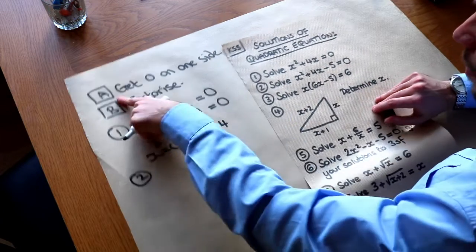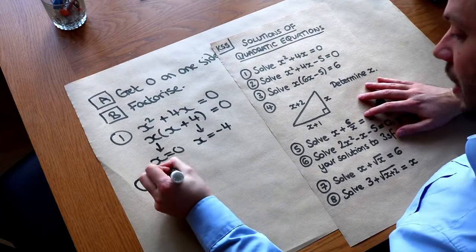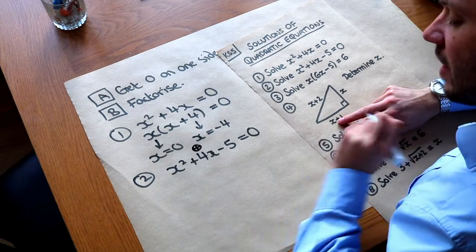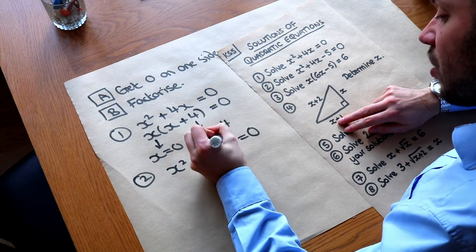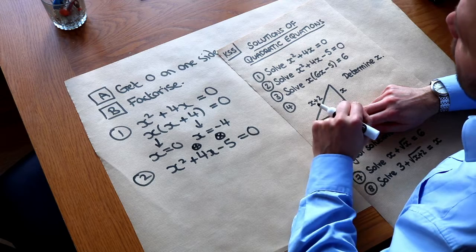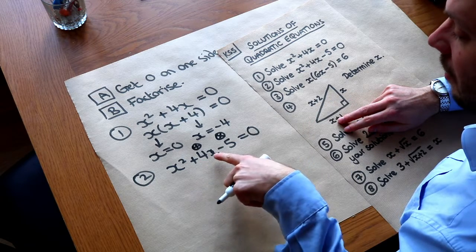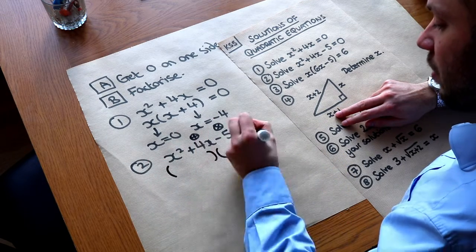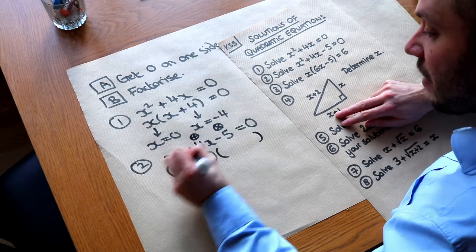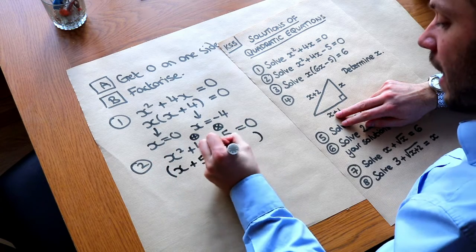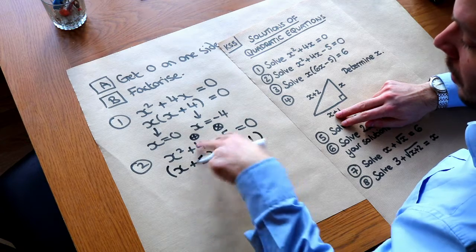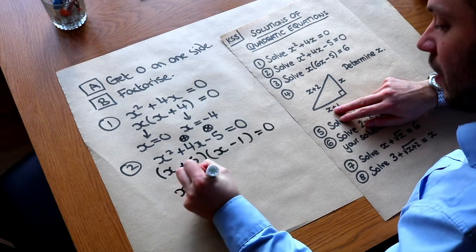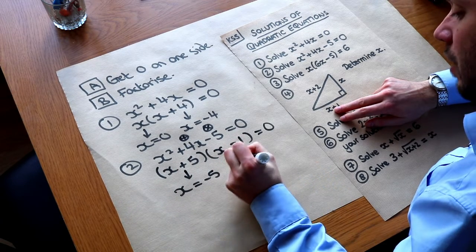Question 2. We've got zero on one side so we just need to factorise. To factorise a quadratic with x squared, we need to find two numbers which add to give the middle number, plus 4, and multiply to give the last number, minus 5. Since 5 is prime, those two numbers are plus 5 and minus 1, because 5 plus minus 1 is 4 and 5 times minus 1 is minus 5. So we factorise to get x plus 5 and x minus 1. Negating those gives x equals minus 5 or x equals plus 1.